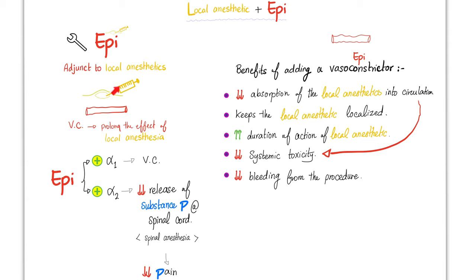If you give a vasoconstrictor, that vessel is constricted. Therefore, the local anesthetic has to stay at the injection site — it's not going to diffuse all over the place, go to the blood, and travel to other parts of your body. It will stay here to do its job, which is anesthesia. So we are prolonging the effect of local anesthesia.